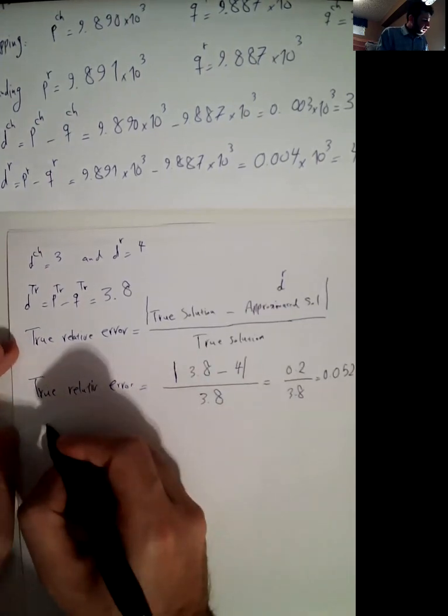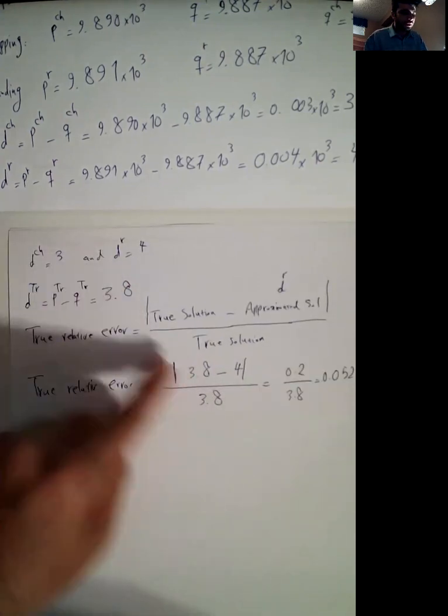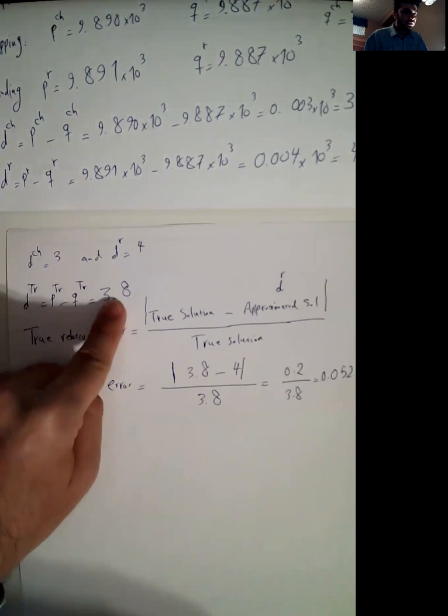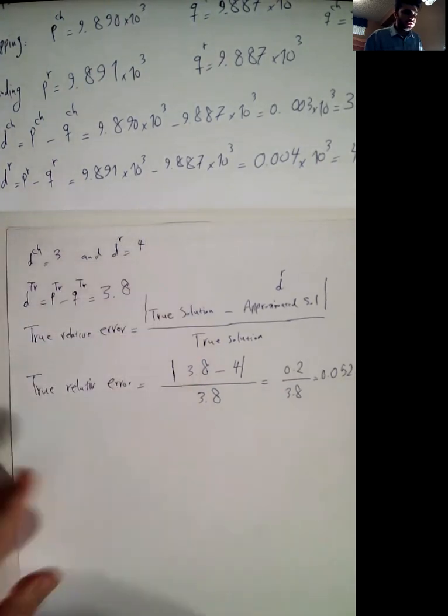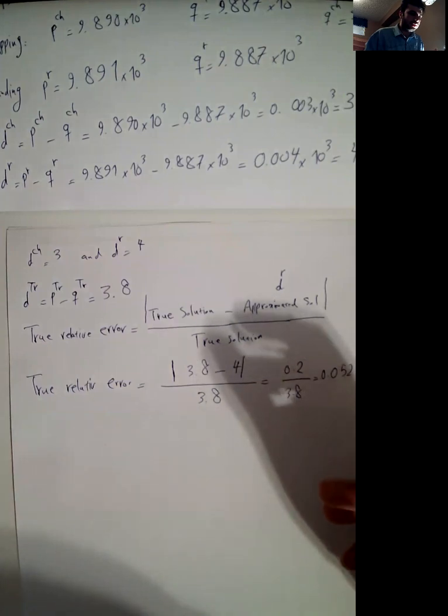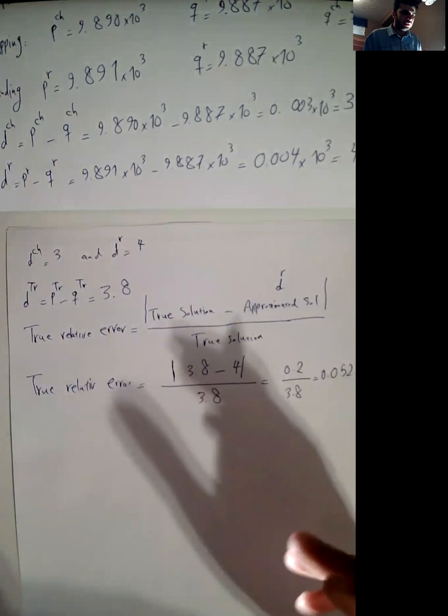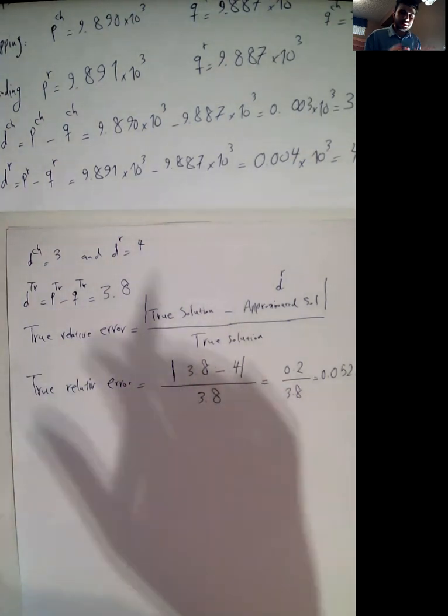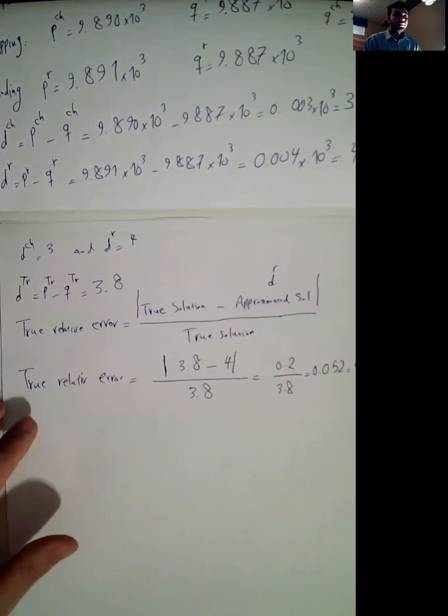Okay, so for just this example, we see that the true value 3.8 is closer to rounding error. It doesn't mean that rounding is a better approach than chopping because this is only the case for this example. I hope you enjoyed this video and have a good life.